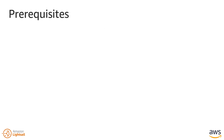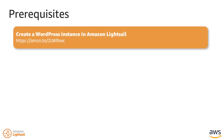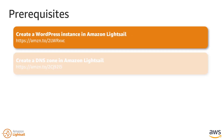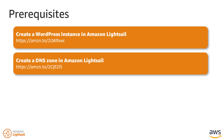There are a few things that need to be done before HTTPS encryption can be configured on the WordPress instance. Create a WordPress instance in LightSail and create a DNS zone in LightSail for the domain that will be used with the WordPress website. For more information about setting up these prerequisites, browse to the address shown on the screen.